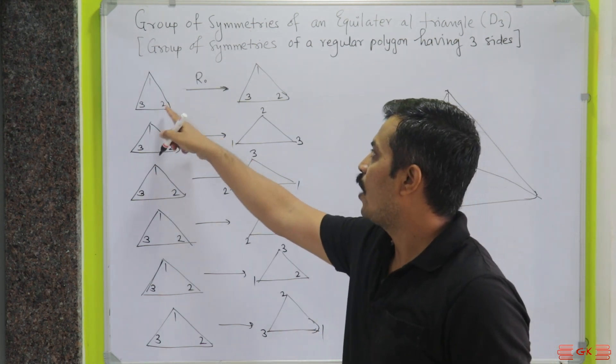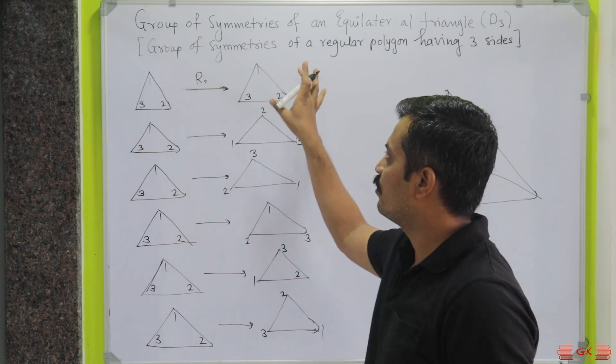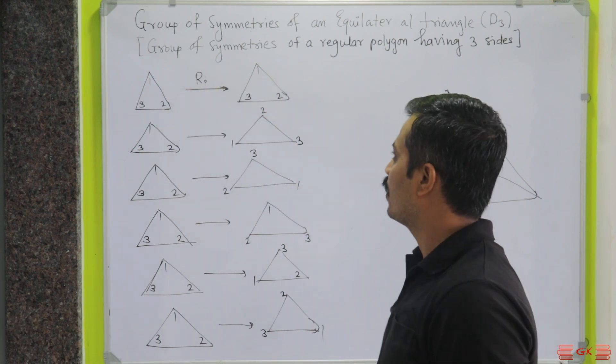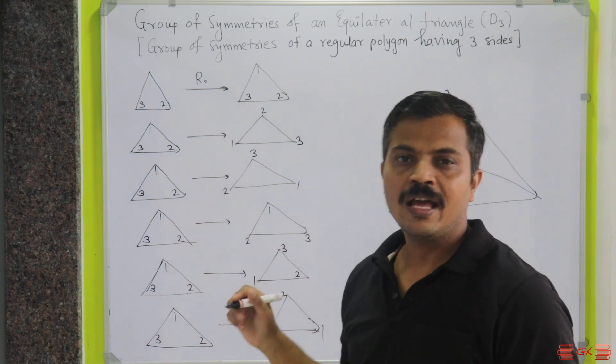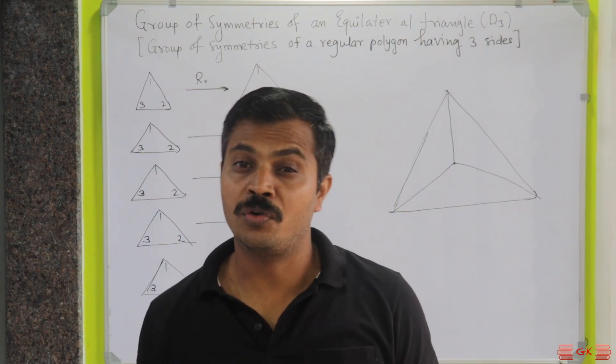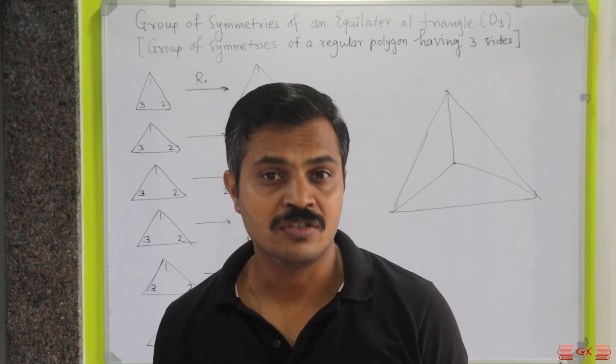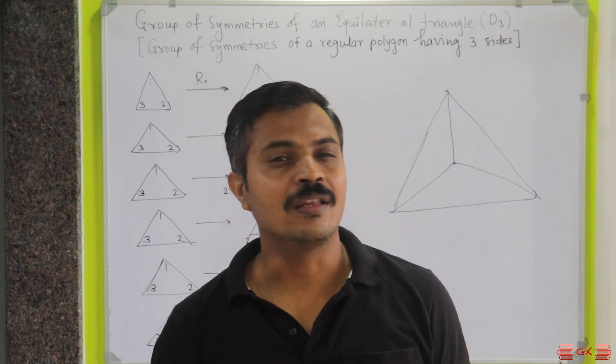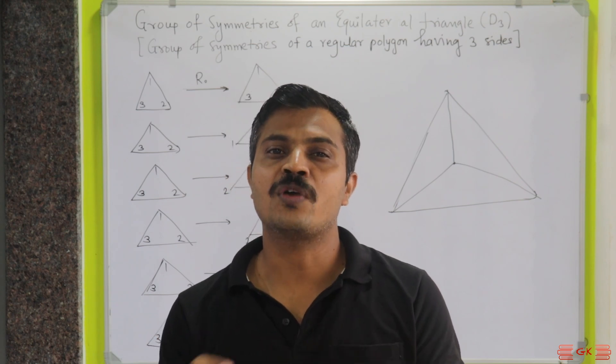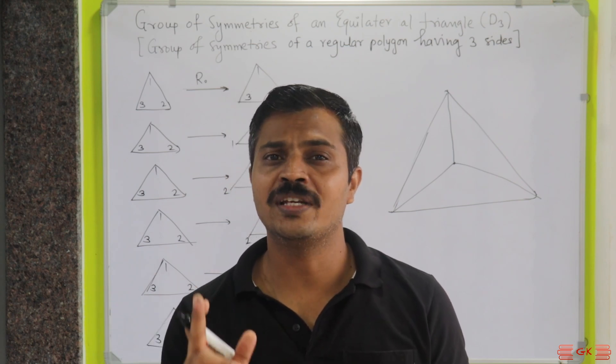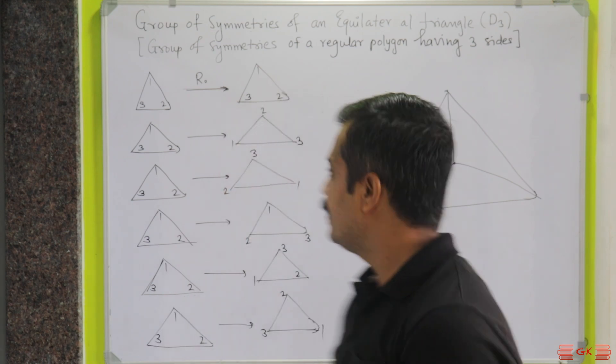First of all, you have R0, the equilateral triangle as it is. Now, rotations will be there, so the question is, what will be the degree of rotation? In case of D4, the degree of rotation was 90 degrees. If you rotate that square by 90 degrees, you're getting a symmetry. But in this case, the rotation is going to be different.